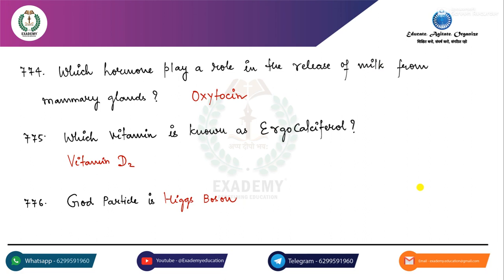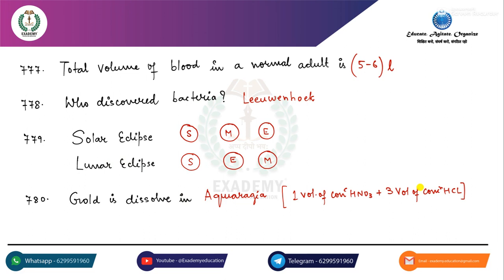God particle is Higgs boson. Total volume of blood in a normal adult is 5-6 liters. Who discovered bacteria? Leeuwenhoek. Solar Eclipse: SME. Lunar Eclipse: SEM. Gold is dissolved in Aqua Regia — 1 volume of concentrated HNO3 plus 3 volumes of concentrated HCl.